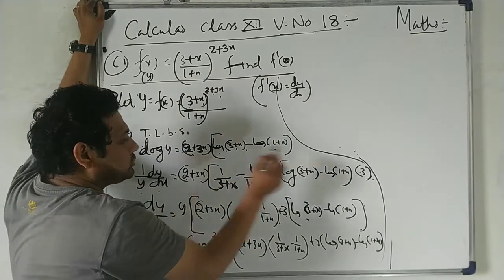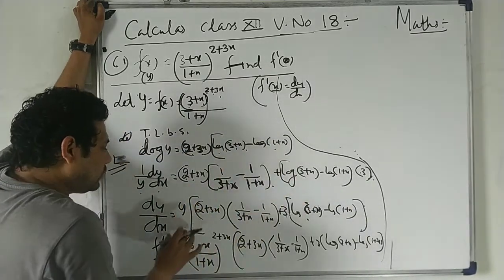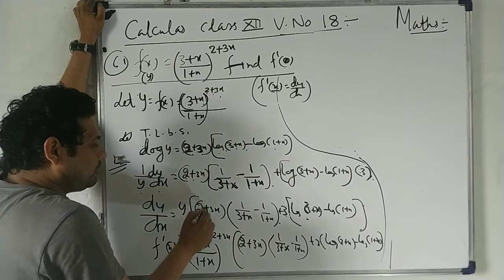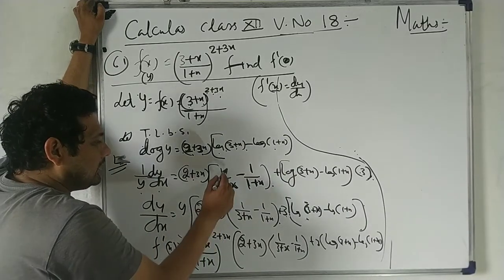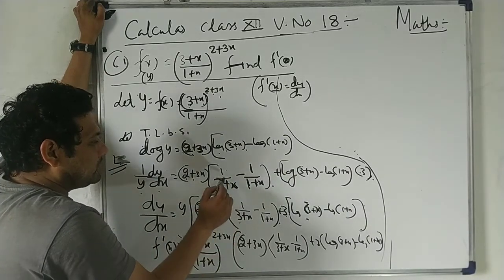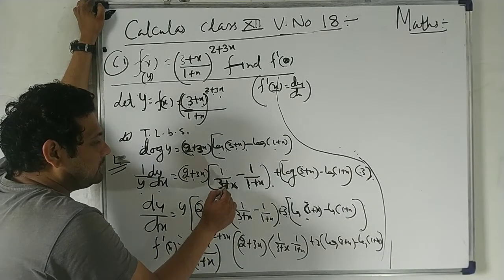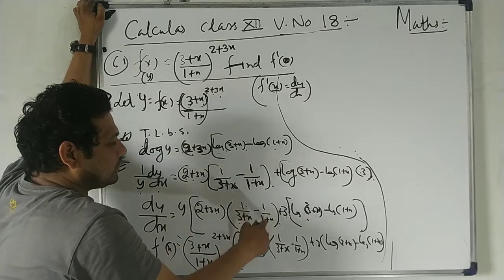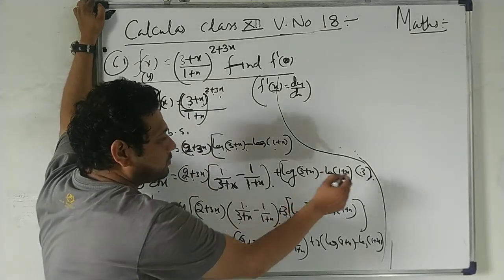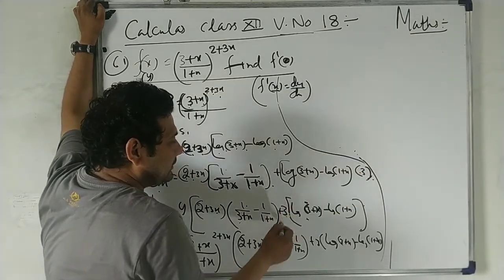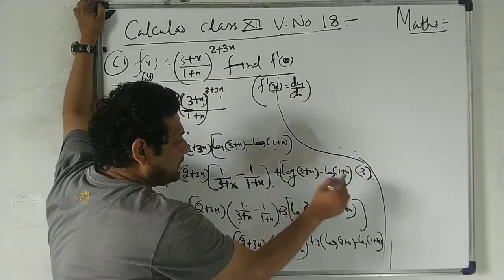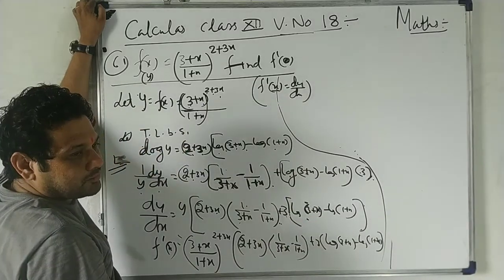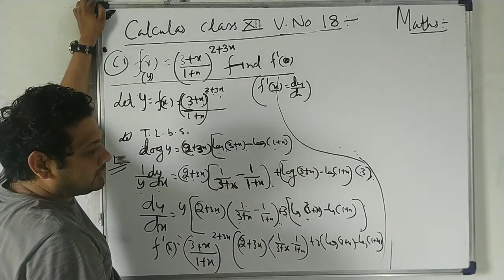For the 3x term, derivative is 3. Now we bring y to the other side. So dy/dx = y × [1/(3+x) − 1/(x+1)] × (2+3x) + log(3+x) − log(1+x). This part is done — understood.